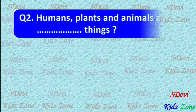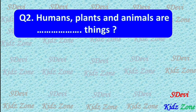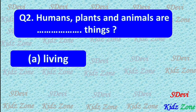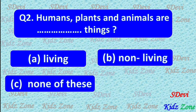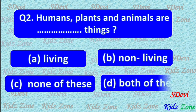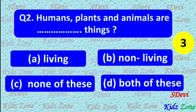Question 2. Humans, plants and animals are ___ things. A. Living. B. Non-living. C. None of these. D. Both of these. The correct answer is A. Living.